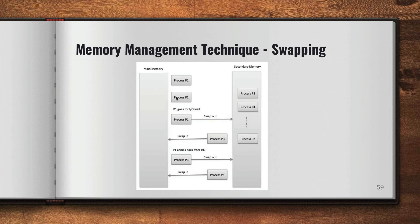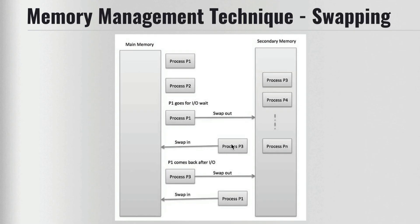Let's say we have this main memory and secondary memory with different processes. In main memory we have process P1 and P2, and in secondary memory we have P3, P4, and up to Pn. Now let's say there is a request for P3, but we don't have P3 available in the main memory. We have a concept of swap out and swap in. In swap out, one process moves from main memory to secondary memory. In swap in, a process moves from secondary memory to main memory.